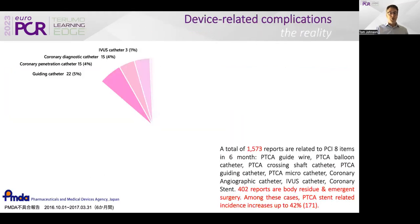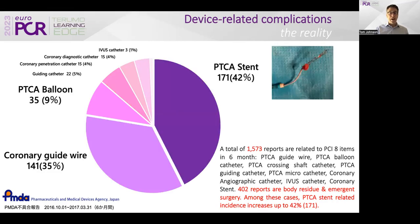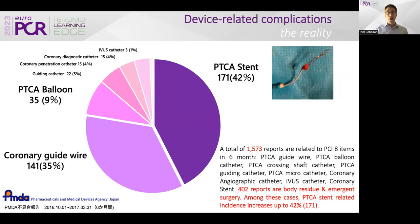The Japanese have done some good work recognising the different nature of device-related complications, with most commonly balloon, guide wire, and stent being the devices likely to relate to complications. In 42% of cases, the stent is the cause.